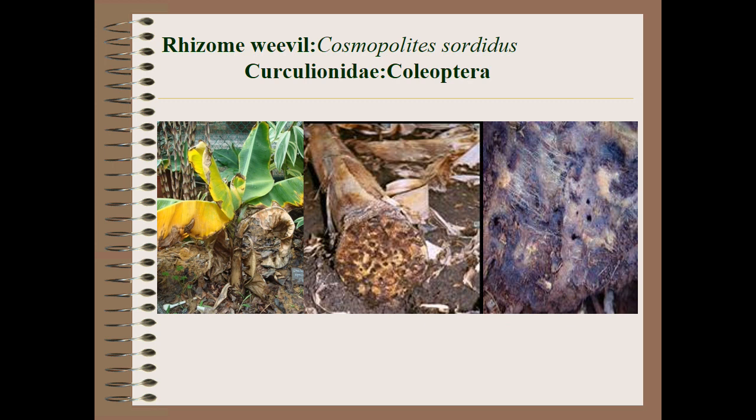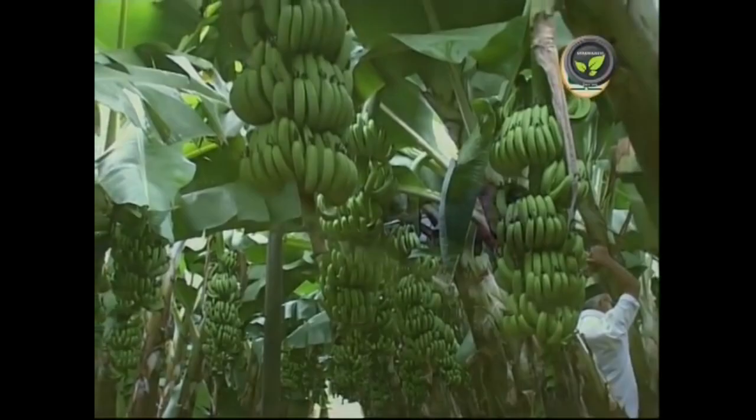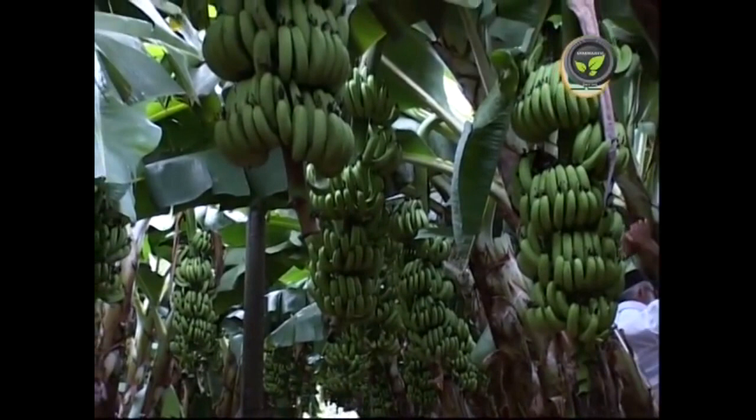First one is Rhizome weevil, Cosmopolites sordidus, family Curculionidae, order Coleoptera. The symptom is the grub causes death of unopened stem and withering of outer leaves. It also bores into the rhizome and causes the death of plants.